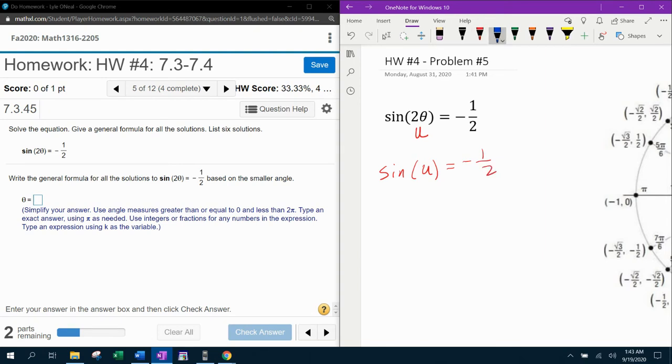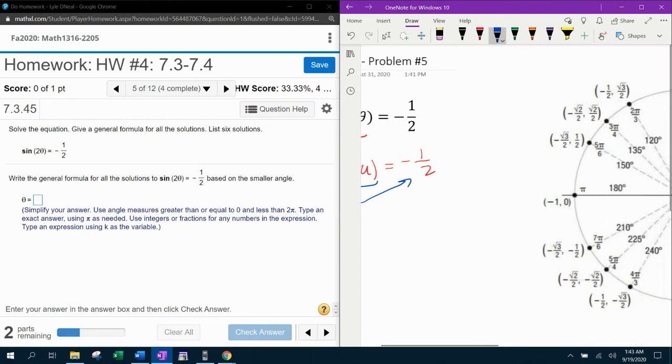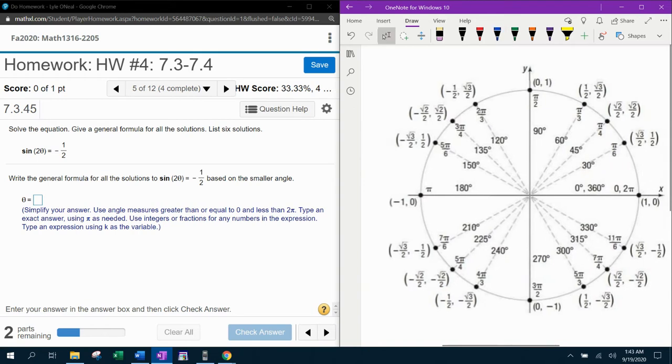So remember from the unit circle, sine theta, or in this case sine u is y, sine is y, and we're looking for all the angles in the unit circle that have a y-coordinate of negative half. So coming over here to the unit circle, y-coordinate of negative half is going to be at 7 pi over 6 and 11 pi over 6. There's two angles.